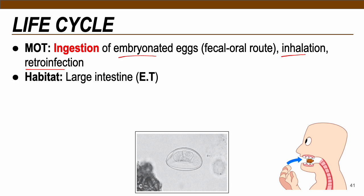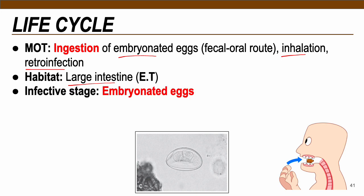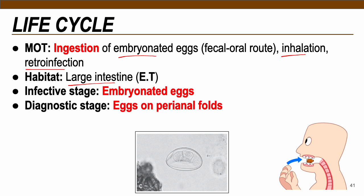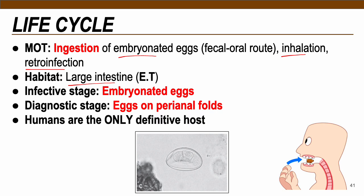The habitat of Enterobius adults is the large intestine — part of the mnemonic ET for Enterobius and Trichuris. The infective stage is embryonated egg, and the diagnostic stage is eggs on perianal folds — eggs are not passed in the stool but deposited in the anal region. Humans are the only definitive and intermediate host, harboring both larval and adult forms.